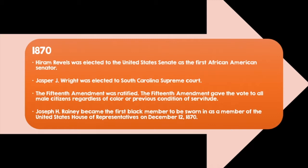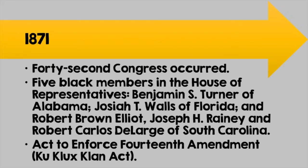In 1871, the 42nd Congress convened with five African American members in the House of Representatives: Benjamin S. Turner of Alabama, Josiah T. Walls of Florida, and Robert Brown Elliott, Joseph H. Rainey, and Robert Carlos DeLarge of South Carolina. Also in 1871, the Ku Klux Klan Act was enacted as an act to enforce the 14th Amendment.